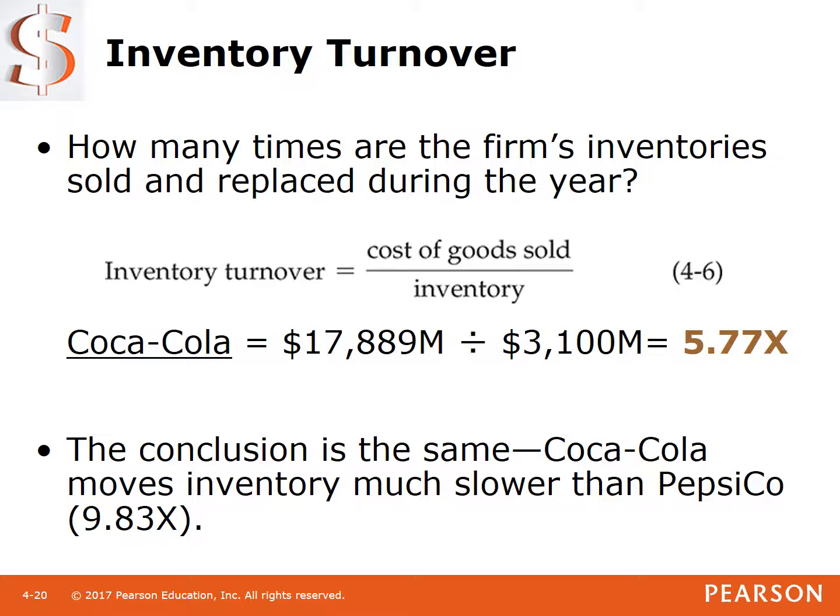Inventory turnover tells us how many times a year we sell out our inventory. We take cost of goods sold from the income statement and divide by the inventory balance from the balance sheet. Coca-Cola sells out their inventory 5.77 times a year, where Pepsi sells theirs out almost 10 times — twice as much. Very interesting.